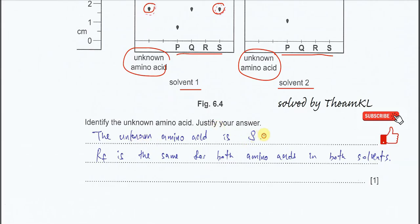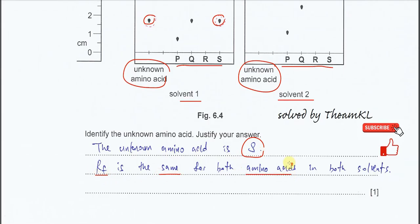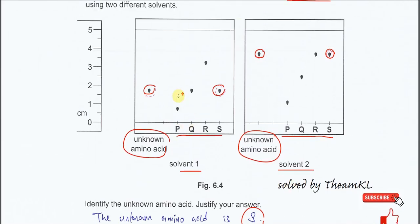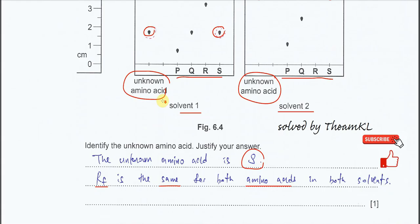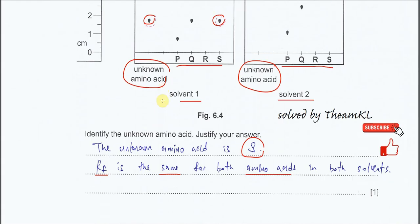Identify the unknown amino acid and justify your answer. The unknown amino acid is S. Why? Because the retention factor is the same for both amino acids in both solvents. When we calculate using this solvent front, which is about 5 cm, we use the distance traveled by the spot over this 5 cm to get the RF value. Basically there will be the same RF value for this unknown amino acid and the compound S.